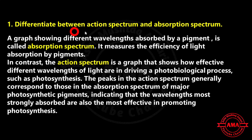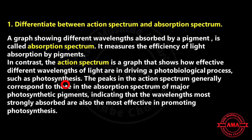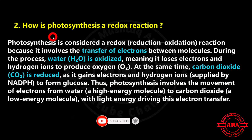First short question: differentiate between action spectrum and absorption spectrum. A graph showing different wavelengths absorbed by a pigment is called the absorption spectrum. It measures the efficiency of light absorption by pigments. In contrast, the action spectrum is a graph that shows how effective different wavelengths of light are in driving a photobiological process such as photosynthesis. The peaks in the action spectrum generally correspond to those in the absorption spectrum of major photosynthetic pigments.